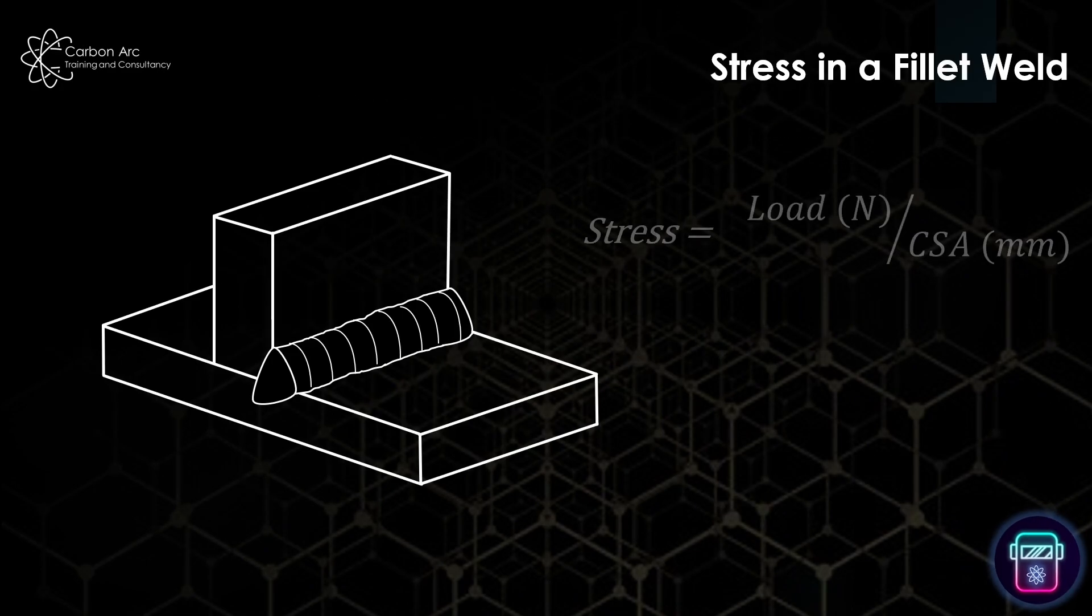This is our fillet weld. In our equation we used in the last example, stress equals load divided by cross-sectional area.